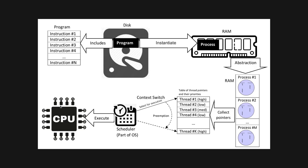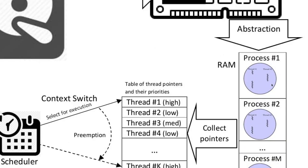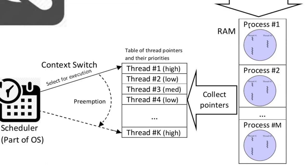The CPU is going to execute the instructions in a program. These programs exist on your disk — in your bin directory you'll see the binaries, just ones and zeros. When we execute them, the OS loads them into RAM and creates a process. You can have multiple processes running — a Discord process, Telegram process, Firefox process — and sometimes programs even spawn more processes.